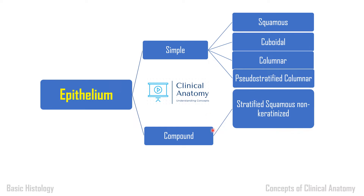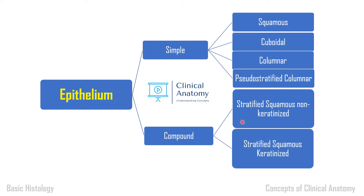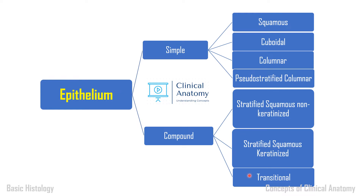In compound stratified squamous — non-keratinized — the naming is based on the shape of the topmost layer of cells, since in multiple layers the shape of each layer varies. There are types like stratified squamous, stratified cuboidal, stratified columnar, and transitional. For slide identification, you need to know stratified squamous non-keratinized, stratified squamous keratinized, and transitional epithelium. These three are sufficient to identify both general and systemic histology slides.